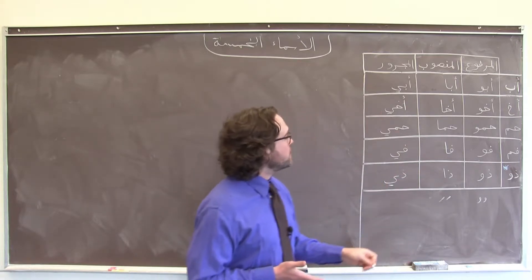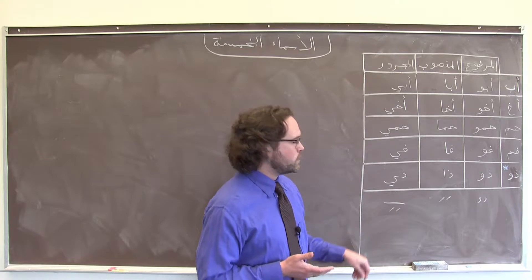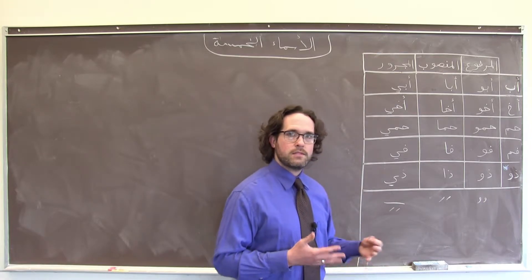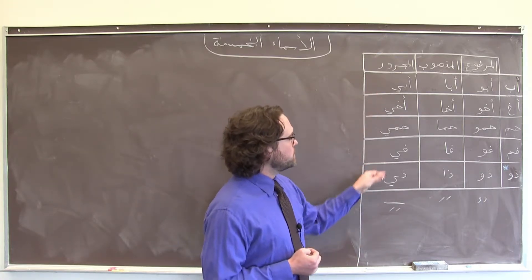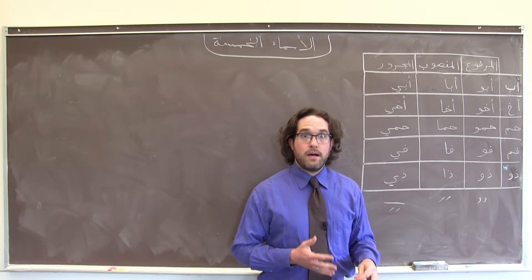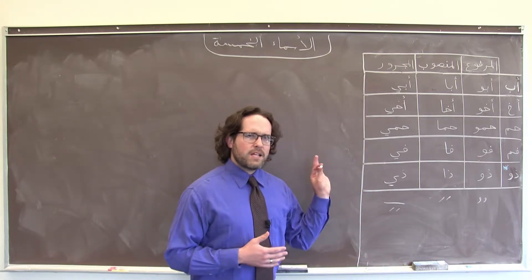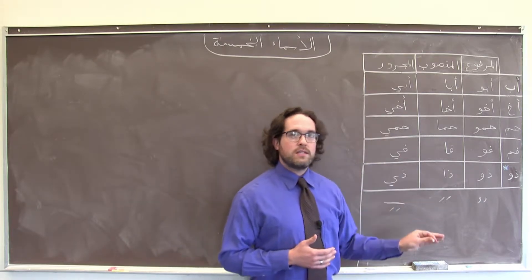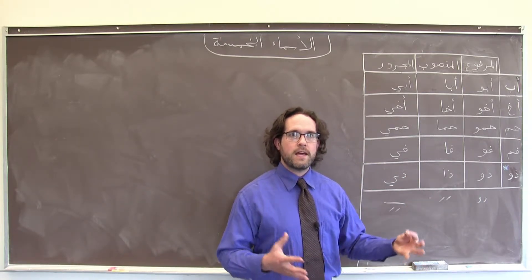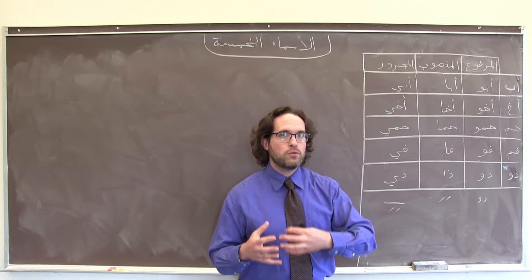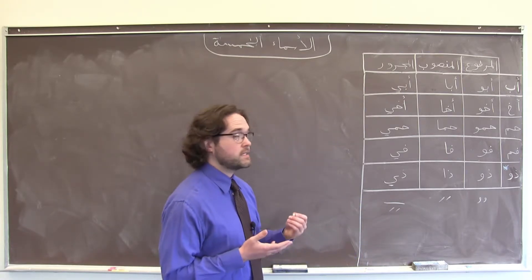And as you might expect with the مجرور, on a normal singular noun we would have one كسرة or two, and instead we have a long يَا attached to it. Again, that's only when we see these words in إضافات, or if they have almost all pronoun suffixes — possessive suffixes — attached to them.